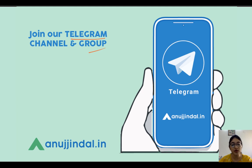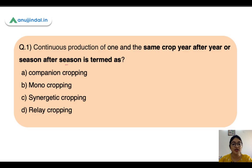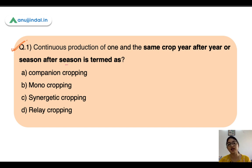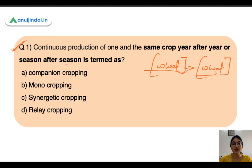The first question: continuous production of one and the same crop year after year or season after season is termed as what? So the same type of crop is grown season after season — for example, wheat is cultivated year after year with no crop rotation. The options are companion cropping, mono cropping, synergetic cropping, or relay cropping. This type of cropping is known as mono cropping — mono stands for one, meaning a single crop is grown year after year or season after season.